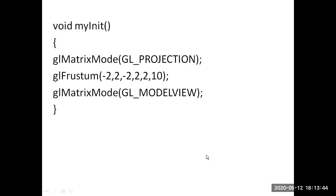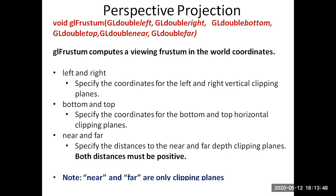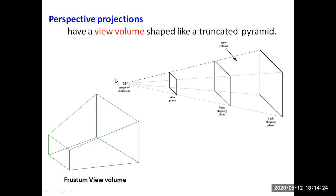glFrustum is an OpenGL perspective viewing function that takes 6 parameters: left coordinate, right coordinate, bottom, top, near, and far. glFrustum defines a viewing frustum in the world coordinate system. Left and right specify the coordinates of the left and right vertical clipping planes. Bottom and top specify the coordinates for the bottom and top horizontal clipping planes. Near and far specify the distance to the near and far depth clipping planes. glFrustum defines the view volume shape, which is a truncated pyramid.